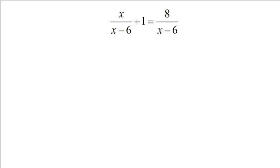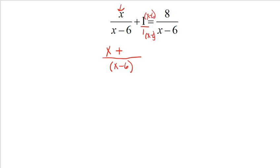Let's actually solve this equation. On the left-hand side, I need to get a common denominator. This one has a denominator of one, so the easiest way to get a common denominator is to multiply the two denominators together. x minus 6 times 1 is x minus 6, so this fraction is good to go. I need to multiply both the top and the bottom of the 1 by x minus 6 to get that common denominator. On top, 1 times x is x, and 1 times negative 6 is negative 6. So on top I get 2x minus 6.